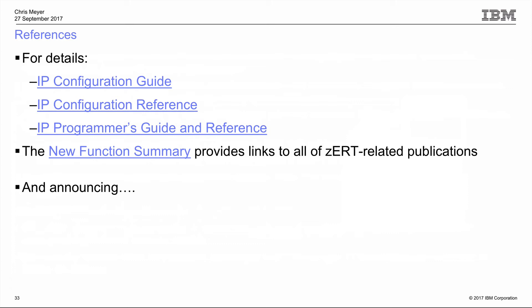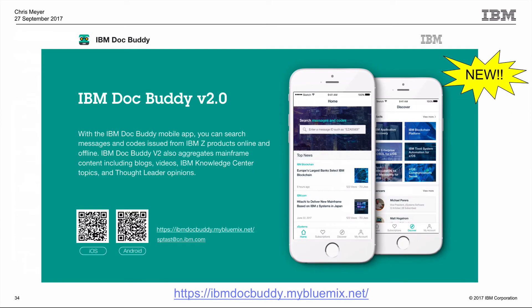For more details, the z/OS Communication Server Configuration Guide, Configuration Reference, and Programmer's Guide and Reference are the key books. The New Function Summary provides a roadmap with links to all those books depending on your interests. IBM's information development team has also made product pubs available online and offline through mobile devices via the DocBuddy application, available for both iOS and Android — it includes pubs, blogs, videos, and more.